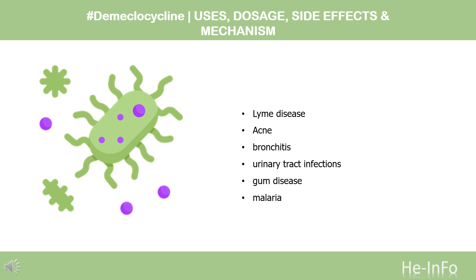D-meclocycline is used primarily to treat Lyme disease, acne, and bronchitis. It is also indicated, but rarely used, to treat urinary tract infections, gum disease, malaria, and other bacterial infections such as gonorrhea and chlamydia.